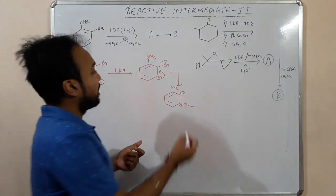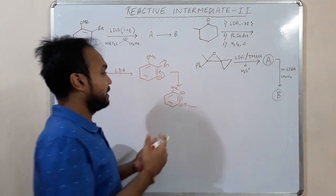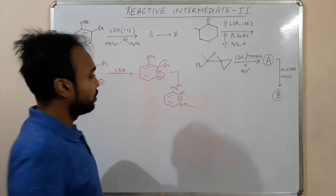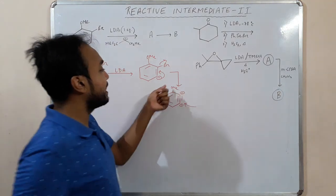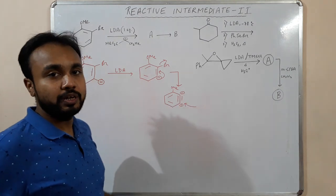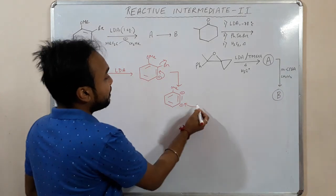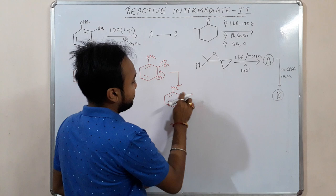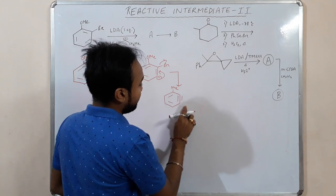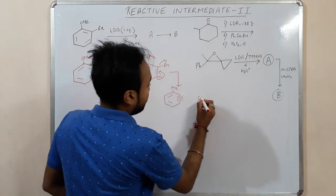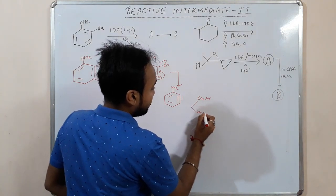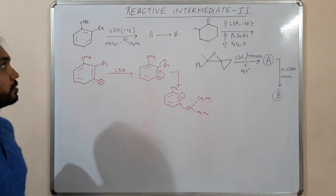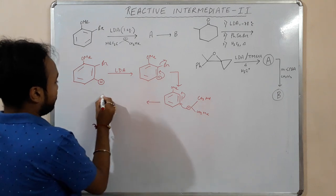We have to predict which negative charge is more stabilized. OMe has a minus-I (electron withdrawing inductive) effect. If an electron withdrawing group is adjacent to a negative charge, it can stabilize it. So the nucleophile will attack at the position where the negative charge ends up adjacent to OMe, giving a more stable intermediate.